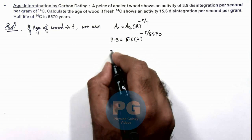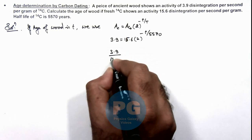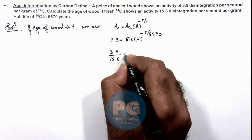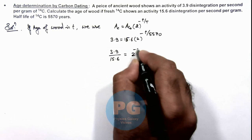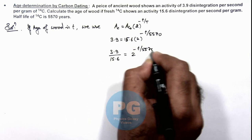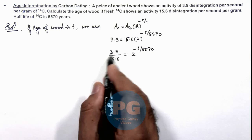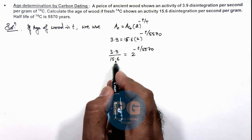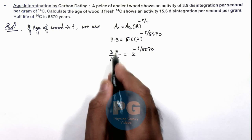So on further simplifying, 3.9 by 15.6 is equal to 2 to power minus t by 5570. And this 3.9 by 15.6 can be written as 1 by 4.